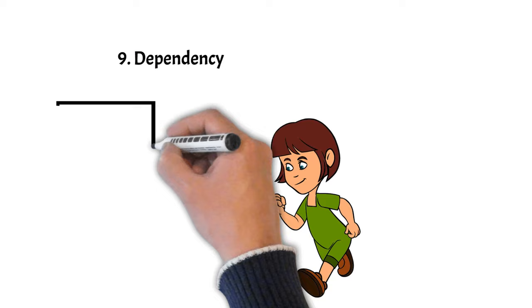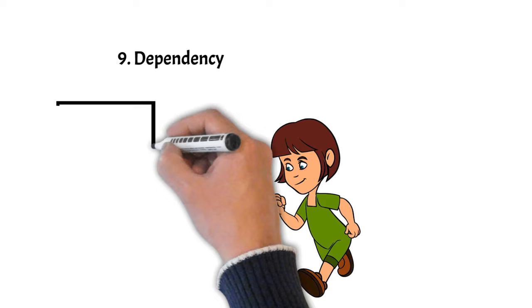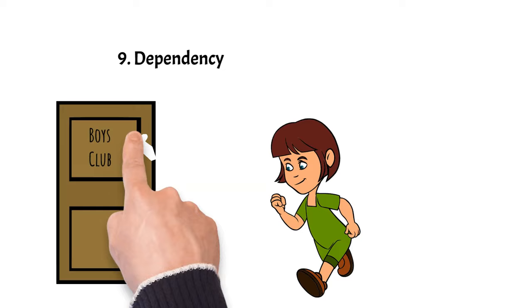Number 9: Dependency. Some type 6s may exhibit dependency on their relationships for emotional security, which could be draining for people who are not accustomed to this level of emotional responsibility.